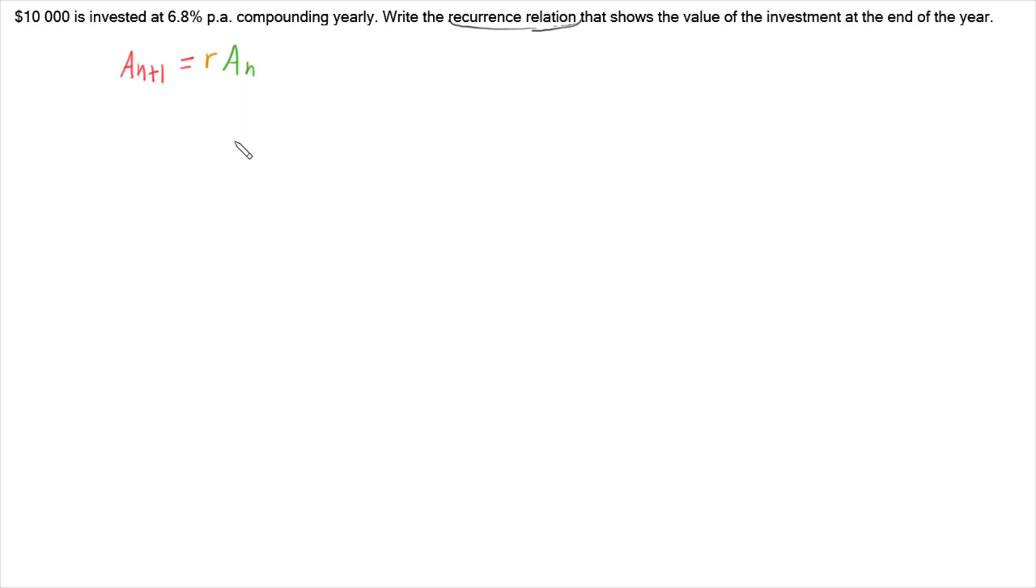So a few things we need to work out before we can even get started. The first thing we want to work out is A_0, our first term, how much money we're starting with in our investment. And this is our principal, so this is our $10,000 that we're going to invest. So we have A_0 is 10,000.